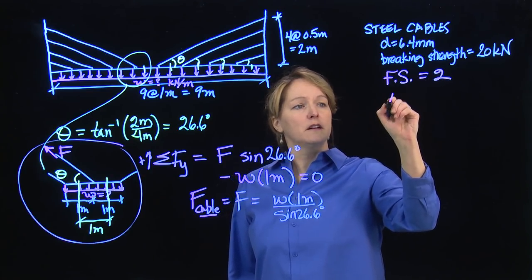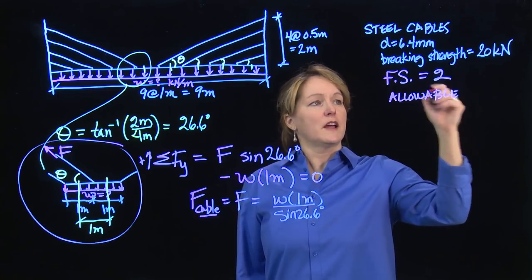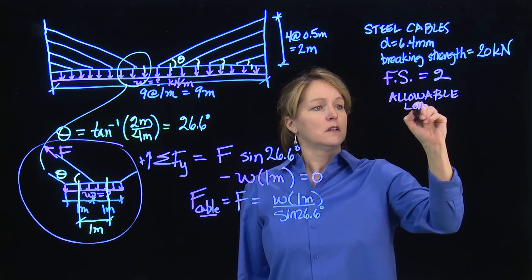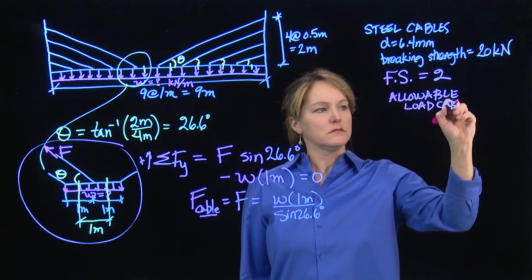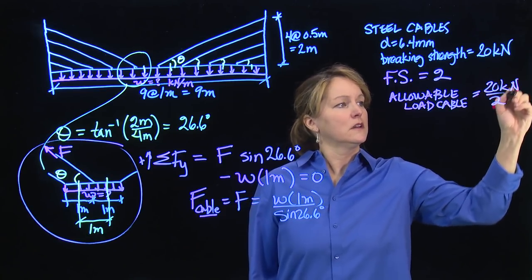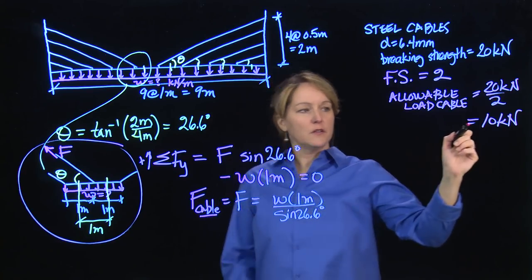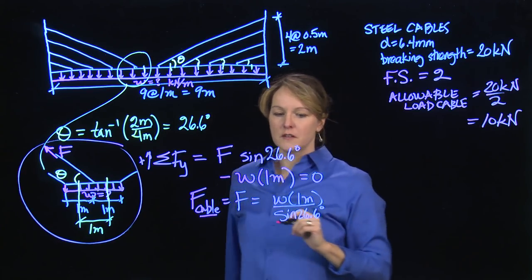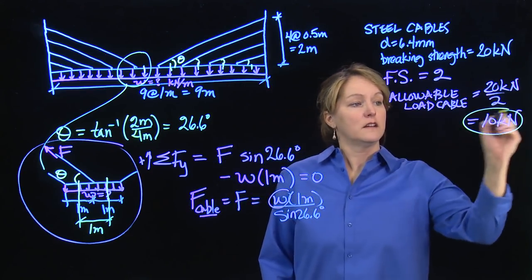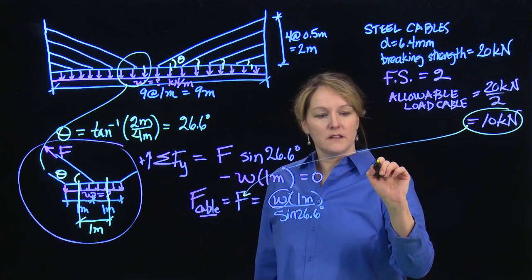That means that I want my allowable, I want to reduce that to put in a factor of safety. I'll assume that my allowable load in the cable is then 20 kilonewtons over 2, or 10 kilonewtons. And I can substitute that 10 kilonewtons in for the force in my cable, and that will allow me to solve for this W. So if I take this allowable load as the force of the cable, I can solve for W.